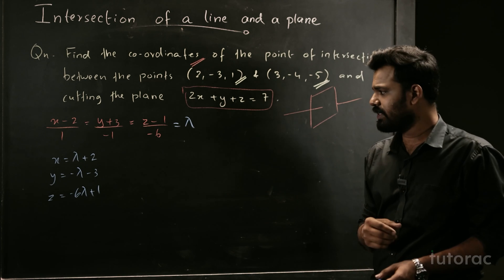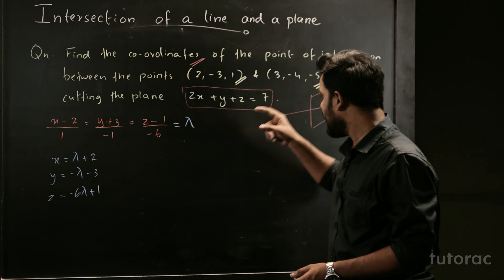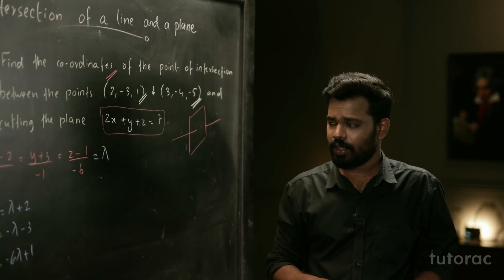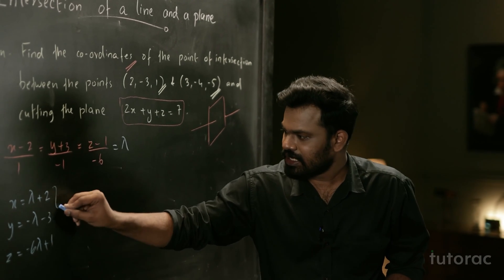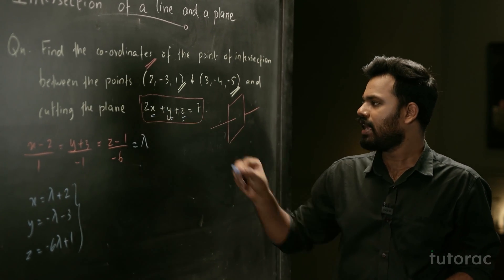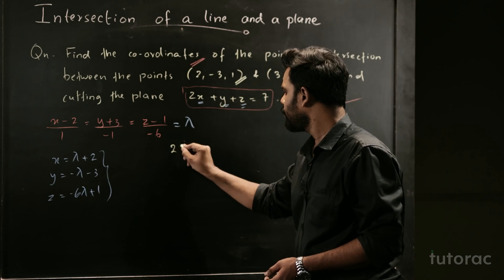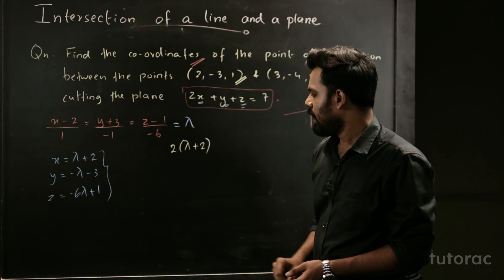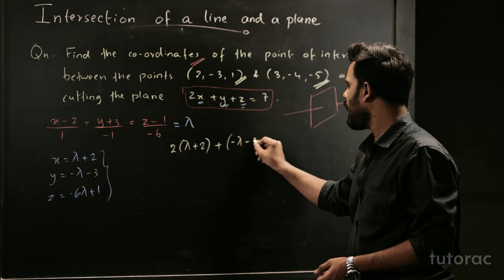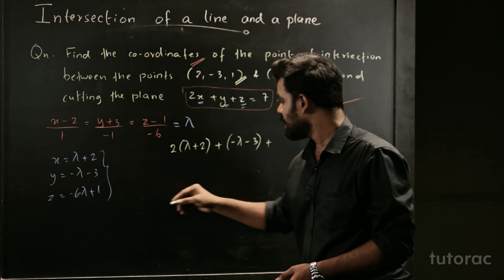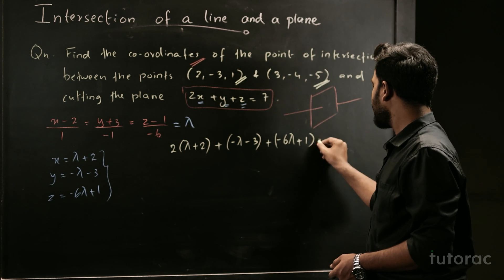These are the values of X, Y and Z. Since this point lies on the plane — because the line is intersecting the plane — I can substitute these values into the plane equation. Substituting: 2 times (Lambda plus 2) plus (minus Lambda minus 3) plus (minus 6 Lambda plus 1) equals 7.